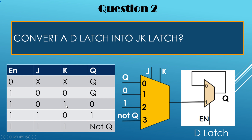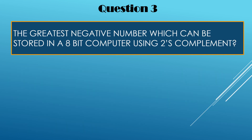When J is 0 and K is 1, output should be 0, so input line 1 is set to 0. When J is 1 and K is 0, output should be 1, so input line 2 is set to 1. When J is 1 and K is 1, output should be the inversion of its previous value, so input line 3 is set to Q-inverted. This is how we convert a D latch into a JK latch.